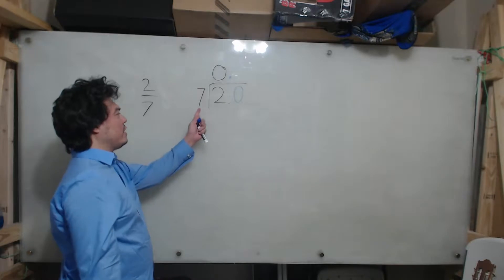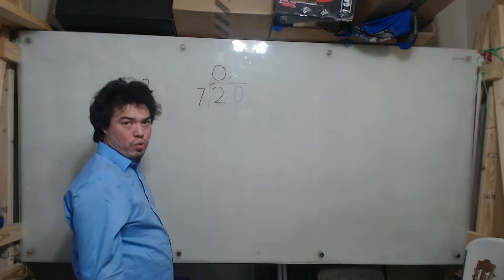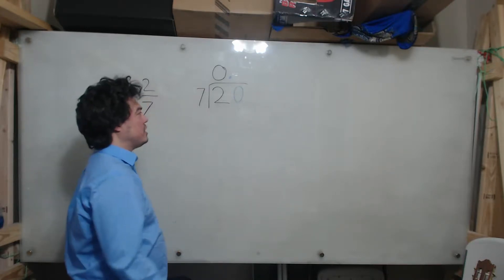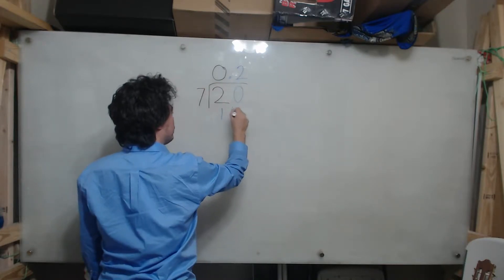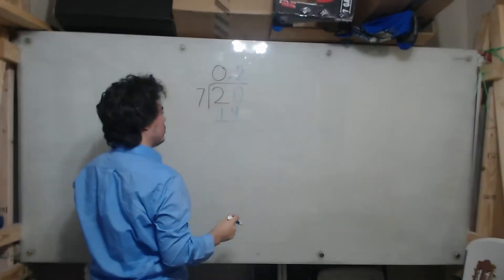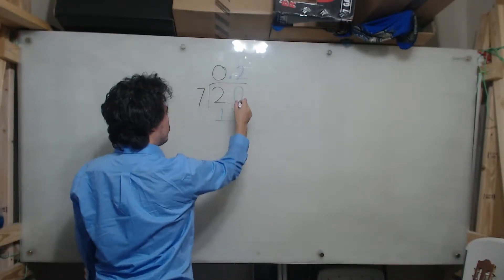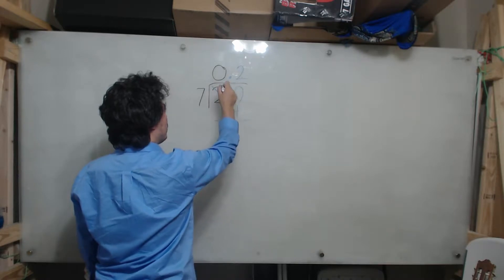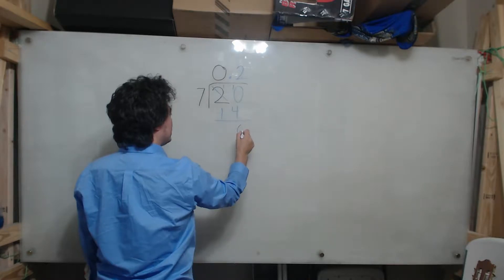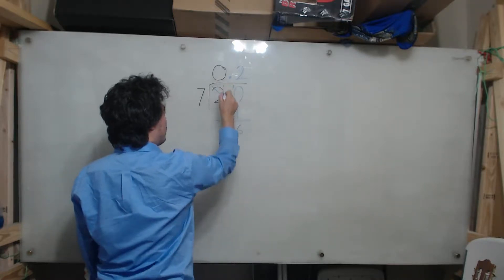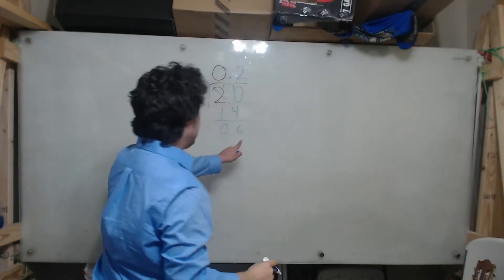So now we ask how many times does 7 go into 20? 7 goes into 20 twice, because 2 times 7 is 14. So we do 2 times 7 and get 14, then we do the subtraction. 20 minus 14: 0 minus 4 we can't do, so we borrow from the 2 to make it a 10. 10 minus 4 is 6, and 1 minus 1 is 0. So we have a 6 here.